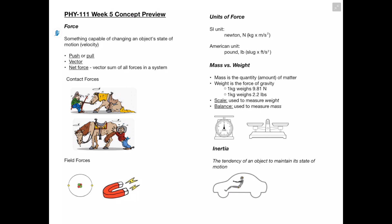We have two main units of force. The standard metric unit is the Newton. From the equation F = ma, acceleration has units of meters per second squared and mass has units of kilograms, so a Newton is kilograms times meters per second squared. The American unit is the pound, which is slugs times feet per second squared — a slug being the American unit for mass, and feet per second squared the unit for acceleration.